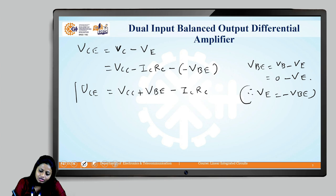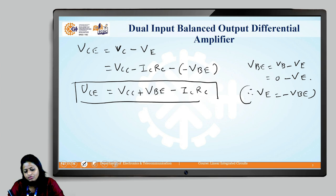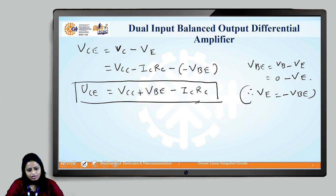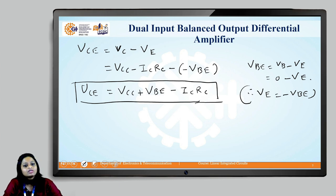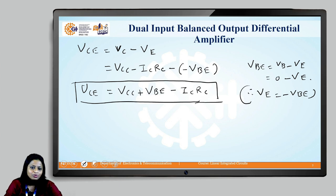In this way, we can get the operating point VCEQ and ICQ for the transistor. As we have discussed, the operating point helps us ensure the transistor operates in the active region. This completes the DC analysis of the dual input balanced output differential amplifier. In the next session, we will discuss the AC analysis of the dual input balanced output differential amplifier. Thank you.